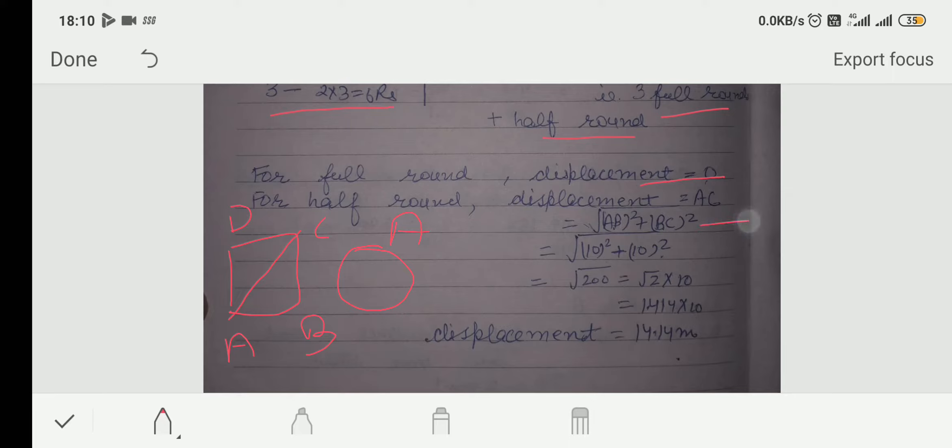So, that's why you calculate A, C by using Pythagoras theorem. AC is equal to under root AB square plus BC whole square.